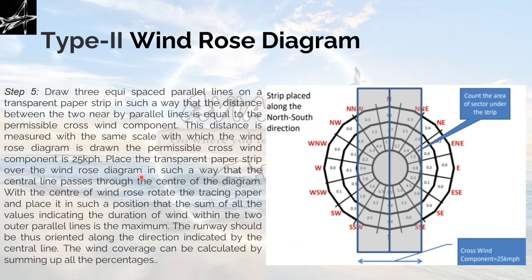Step 6: Place the transparent paper strip over the wind rose diagram in such a way that the center line passes through the center of the diagram. Rotate the tracing paper and place it in such a position that the sum of all the values indicating the duration of wind within the 2 outer parallel lines is maximum. Within the two parallel lines, the duration of wind should come as maximum. The runway should be thus oriented along the direction indicated by the center line. This line will indicate the direction of the runway and these two will help to get the maximum duration.